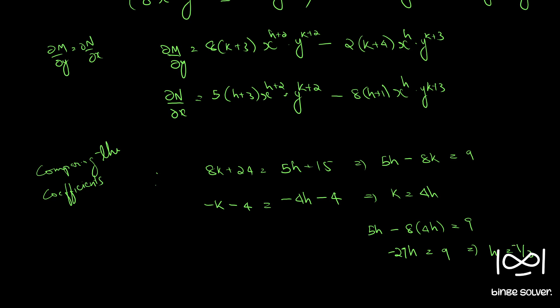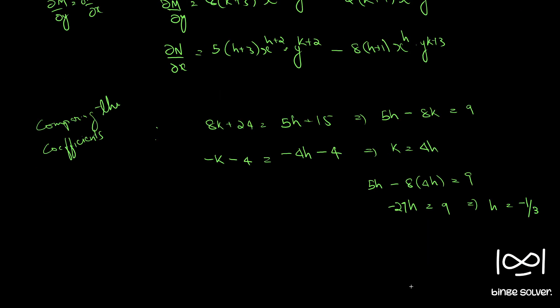Substituting k equal to 4h into 5h minus 8(4h) equal to 9: 5h minus 32h equals 9, so minus 27h equals 9, giving h equal to minus 1 by 3. Therefore k equals 4h equals minus 4 by 3. So we got our integrating factor: x^(minus 1/3) · y^(minus 4/3).